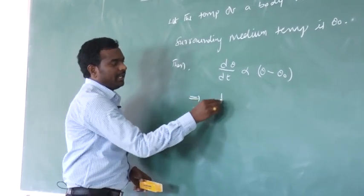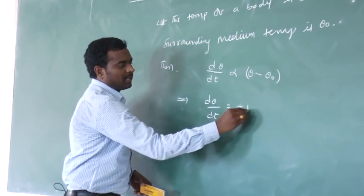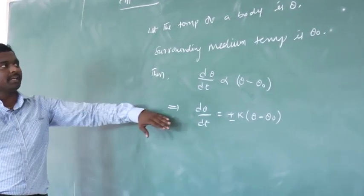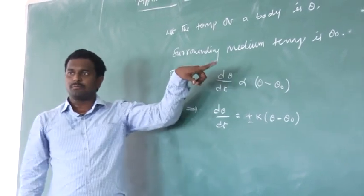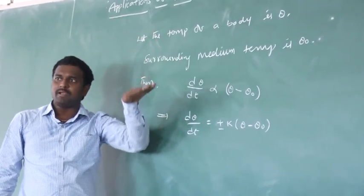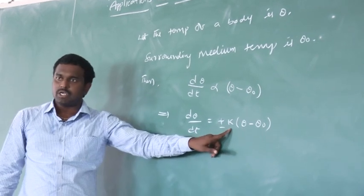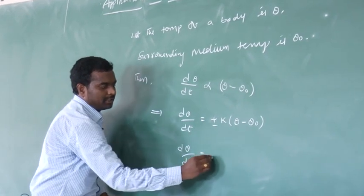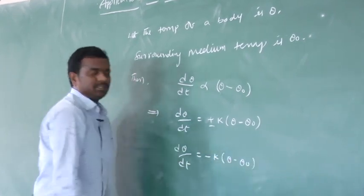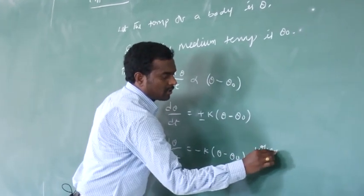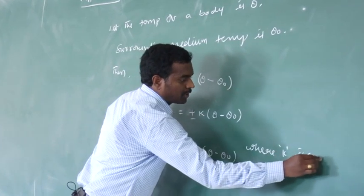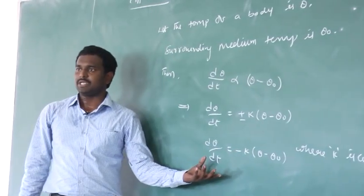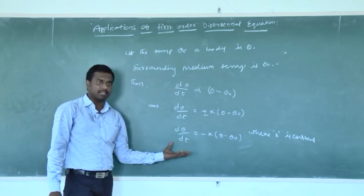So d theta by dt is proportional to theta minus theta naught, and we can write it as d theta by dt equals plus or minus k into theta minus theta naught. Since we are dealing with Newton's law of cooling, the temperature always decreases, so we use minus k: d theta by dt equals minus k into theta minus theta naught, where k is the proportionality constant. This is a first order differential equation.